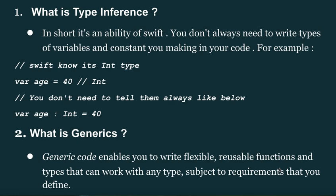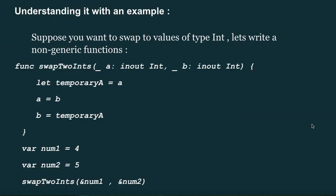What is generics? Generic code enables you to write flexible, reusable functions and types that can work with any type, subject to requirements that you define. For example, suppose you want to swap two values of type int. Let's write a non-generic function: `func swapTwoInts(_ a: inout Int, _ b: inout Int)`, with a temporary variable to perform the swap.